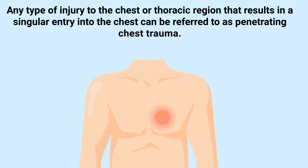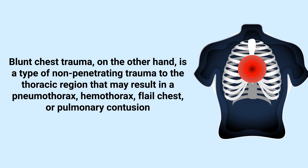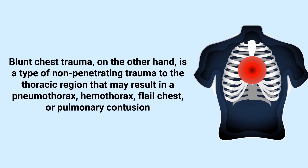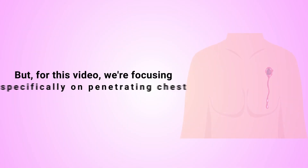Any type of injury to the chest or thoracic region that results in a singular entry into the chest can be referred to as penetrating chest trauma. Blunt chest trauma, on the other hand, is a type of non-penetrating trauma to the thoracic region that may result in a pneumothorax, hemothorax, flail chest, or pulmonary contusion.